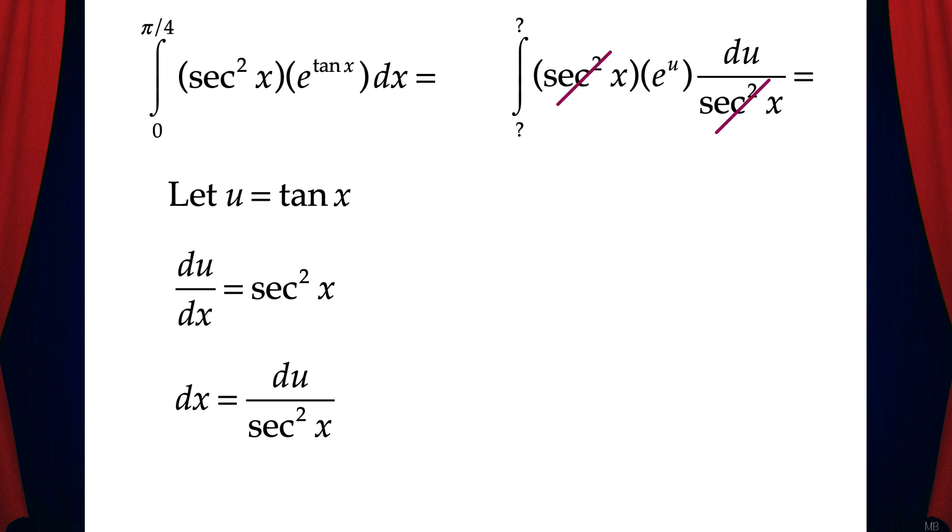And now the entire integral is in terms of u, but note that I've left the limits of integration as question marks. The original limits are 0 to pi over 4, but those are x values, so we need to convert these limits of integration into u values. And the way we'll do that is with a chart.